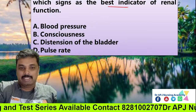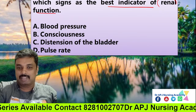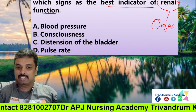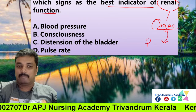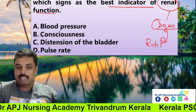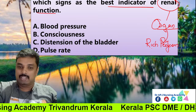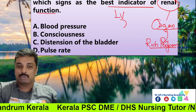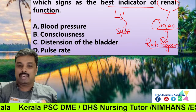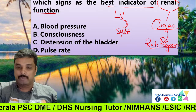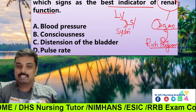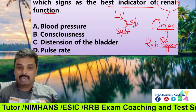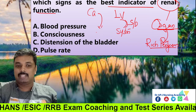Which is the best indicator of renal function? For an organ to function adequately, we need proper perfusion. One organ that indicates the function of the heart is the kidney. The left ventricle contracts to drive systemic circulation, moving blood with diastolic and systolic pressure through all organs.